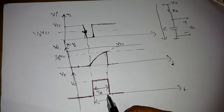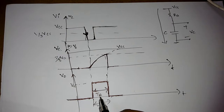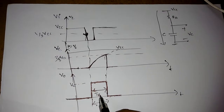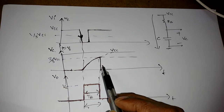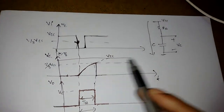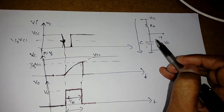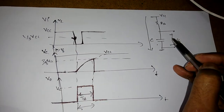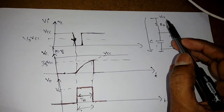The pulse width of the monostable operation is what we need to find. To find this, we look at the capacitor voltage and how it is charging. Whenever the capacitor is charging, it starts from zero volts and can reach a maximum of VCC.